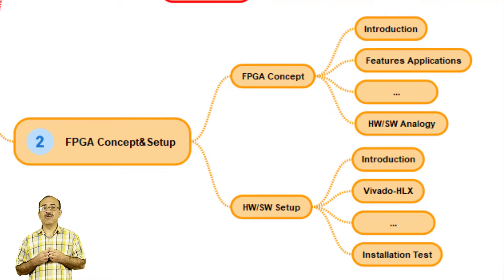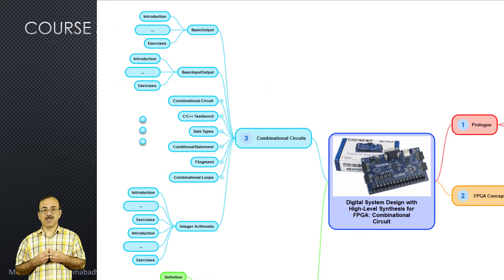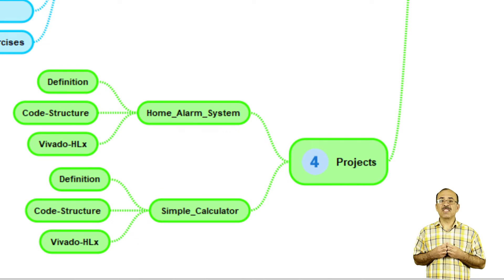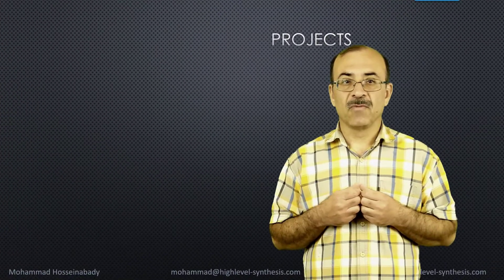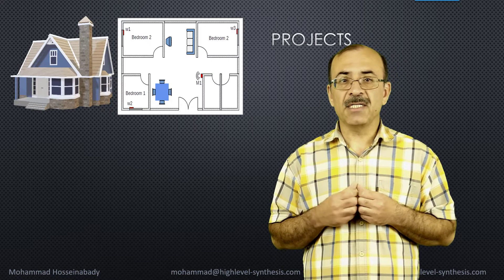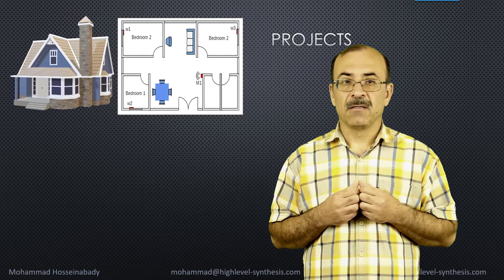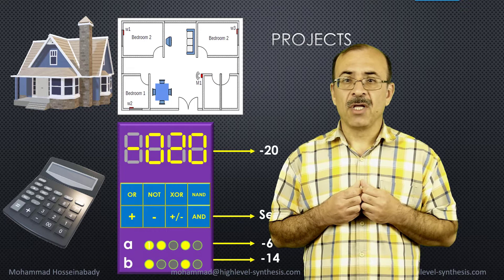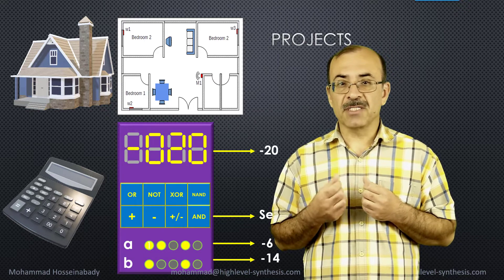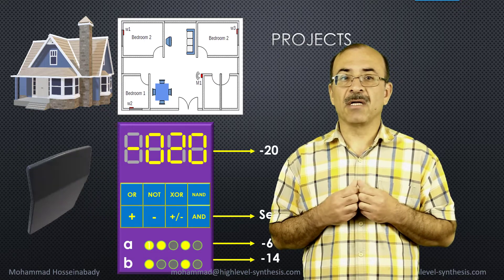The third part explains how to develop combinational circuits using C/C++ language in HLS. This part consists of nine sections and 88 lectures. Finally, the last part puts all explained techniques together to implement two exciting projects. It consists of two sections and six lectures. The first project implements a home alarm system — it consists of two groups of sensors and detects any security breach in the system, and reports that properly. The second project implements a simple calculator, which can perform eight operations and display the results on the seven segments available on the Basis 3 board.